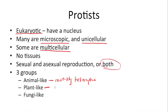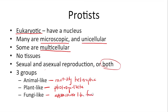Then there are the plant-like groups. We call them plant-like because, like plants, they can photosynthesize — they have chlorophyll and can turn sunlight into chemical energy. And then the fungus-like are called that because they have an appearance that looks like fungi. However, as we'll see, they have some differences and that's why they're not categorized as fungus.